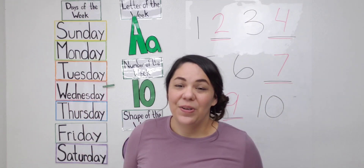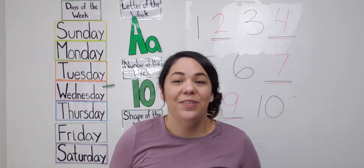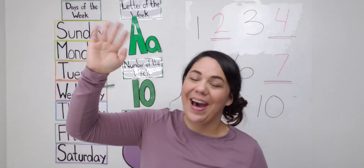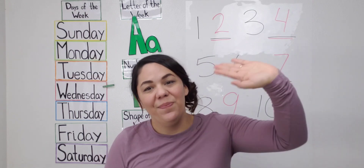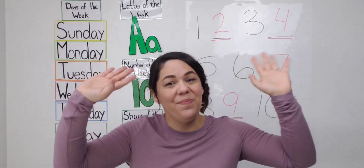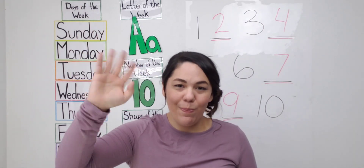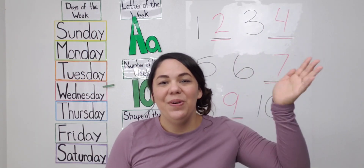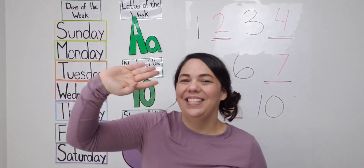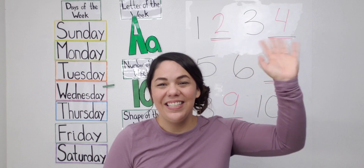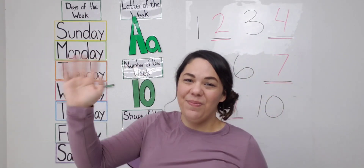Good singing, friends. Well, that's all we have for today for circle time, and now it's time to say goodbye. It's time to say goodbye to all my friends. Goodbye. It's time to say goodbye to all my friends. Goodbye. It's time to say goodbye, so give a smile and wink your eye. It's time to say goodbye to all my friends. Goodbye. Bye friends, see you tomorrow. Bye-bye.